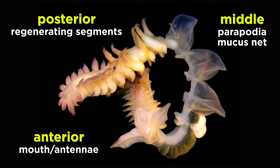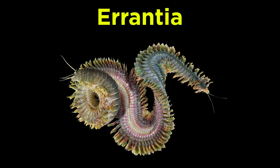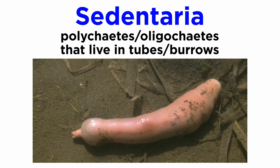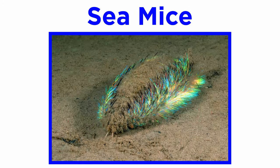The posterior section contains repeating body segments that can be regenerated if damaged. Moving on, let's look at Errantia. These are considered to be mobile segmented worms — hence the name errantia, which comes from an archaic literary term, errant, that refers to traveling for adventure. Sedentaria, meanwhile, contains polychaetes and oligochaetes that live in tubes and burrows.